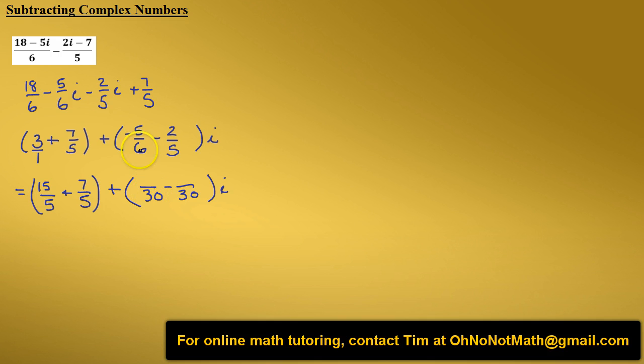So 6 times 5 gives us 30. So 5 times 5 is 25, and that's negative. Let's take the other fraction. 5 times 6 gives us 30. So 2 times 6 is 12.